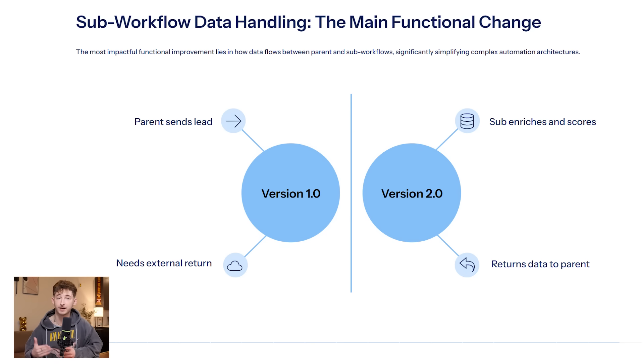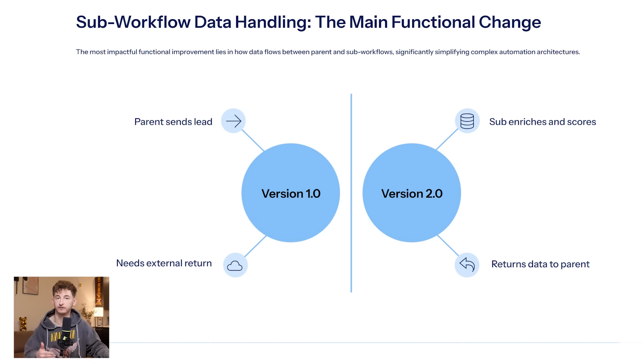Here's an example. Say you're building a lead qualification system. Your main workflow receives a new lead, then executes a sub-workflow that enriches the data, scores the lead, and determines if they're qualified. In v1, your main workflow wouldn't automatically get that enrichment data or the qualification score back — you'd have to set up your own methods to pass that information back, whether that's writing to a database, using webhooks, or other patterns. In v2, the sub-workflow can just return that enriched data and the qualification score directly, so your main workflow receives it and can immediately route the lead to sales if qualified or to nurturing if not.